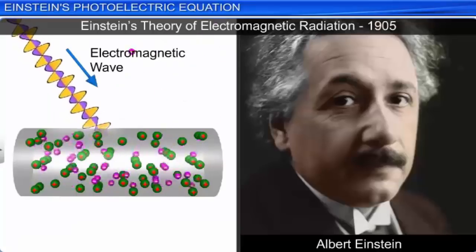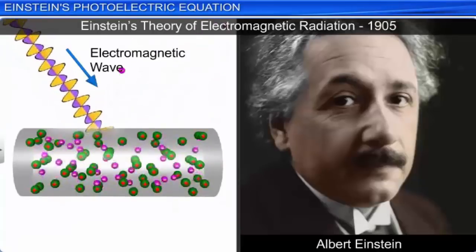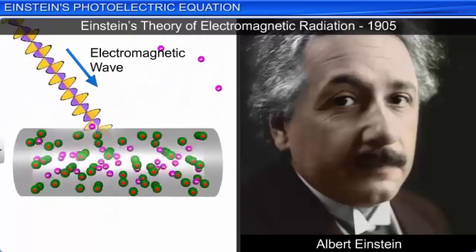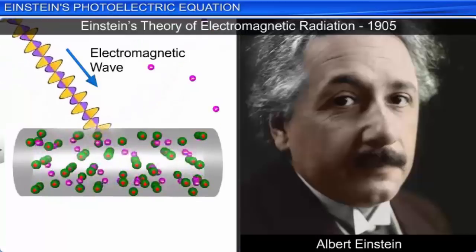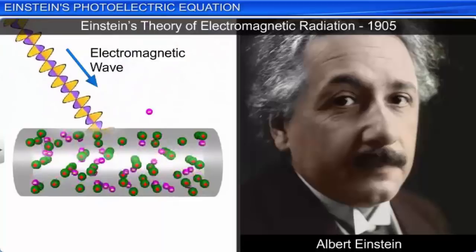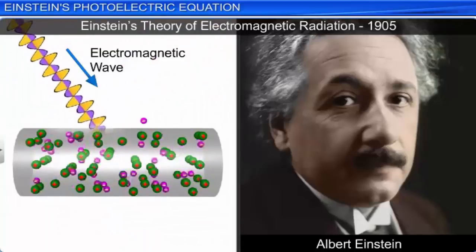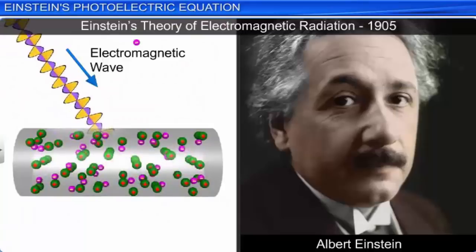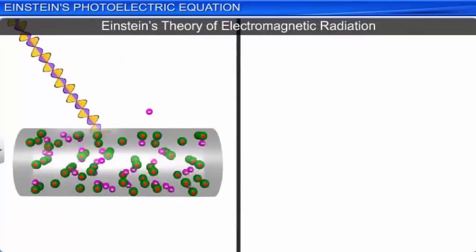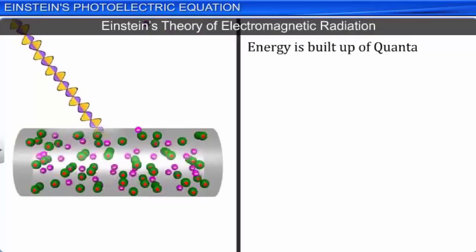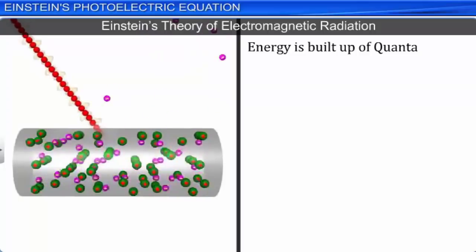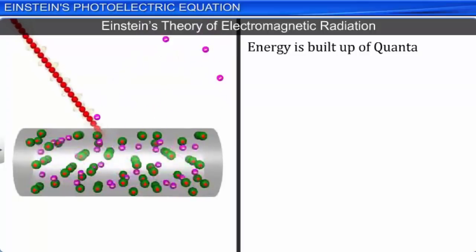From these facts, in 1905, Albert Einstein proposed a radically new theory of electromagnetic radiation to explain the photoelectric effect. This theory addresses the contradictions between particle nature and wave nature of light. According to this theory, electromagnetic radiation energy is built up of discrete units called quanta of energy of radiation, also called the photon.